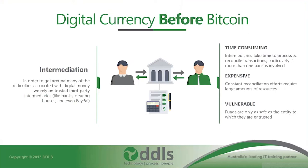Traditionally, up until the invention of Bitcoin, a lot of these problems were managed through a process of intermediation. We relied on trusted third-party intermediaries like banks, clearinghouses such as SWIFT, and even PayPal. They would sit in the middle of a transaction holding their own ledger — and for those not familiar with accounting, a ledger is really just a type of database. On screen we have two individuals: in gray, Alice, and in green on the right, Bob.